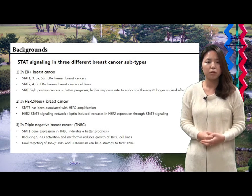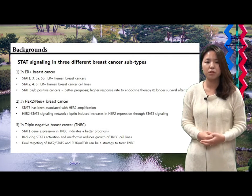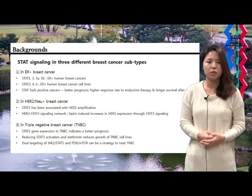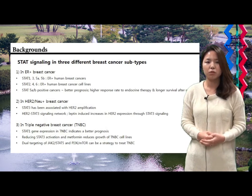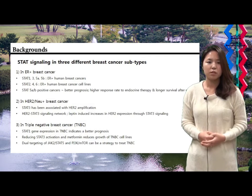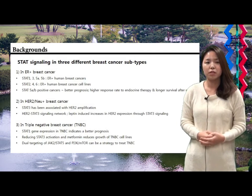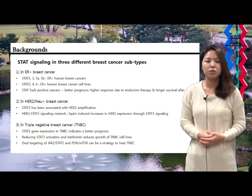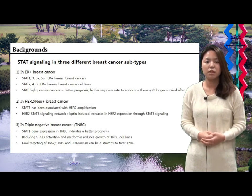In ER negative HER2 positive breast cancers, STAT 3 has been reported to be associated with HER2 amplification. Among possible pathways between STAT 3 and HER2, leptin is known to induce increment of HER2 through STAT 3 signaling. In triple negative breast cancers, STAT 1, 3, and 5 are expressed. STAT 1 gene expression in TNBC indicates a better prognosis. Meanwhile, reducing STAT 3 activation with metformin reduces growth of TNBC cell lines.